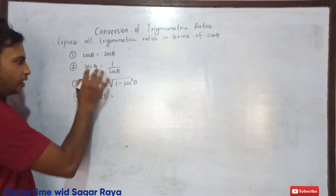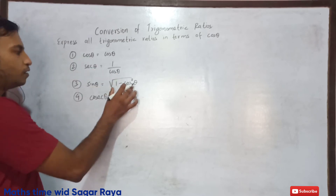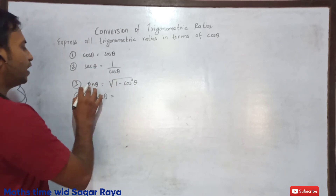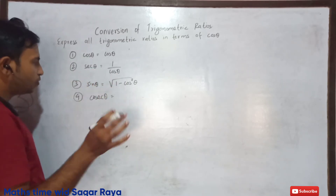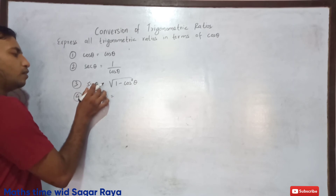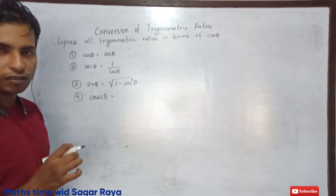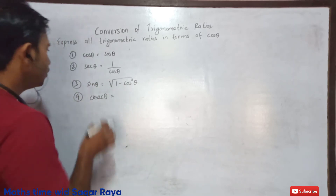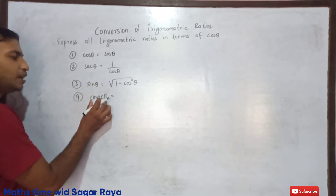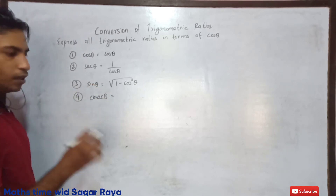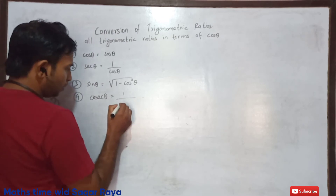There is a relation: sin²θ + cos²θ = 1. From there I got the formula sin theta equals root under 1 minus cos squared theta. Since I know sin theta, the inverse of sin theta is cosec theta.